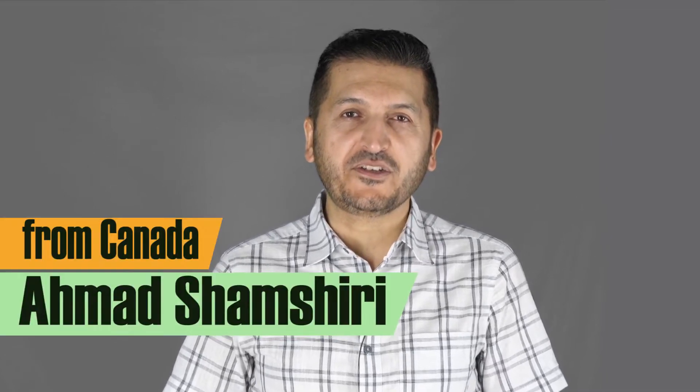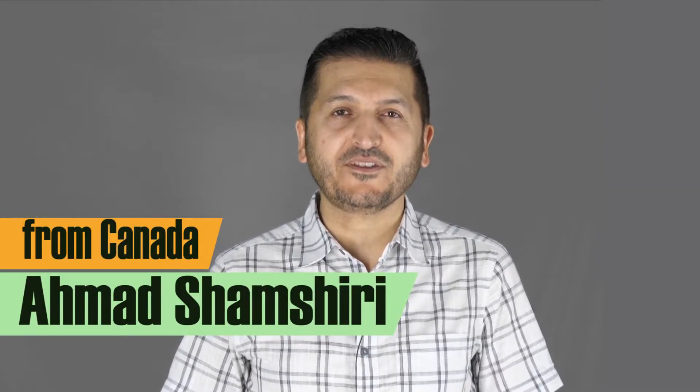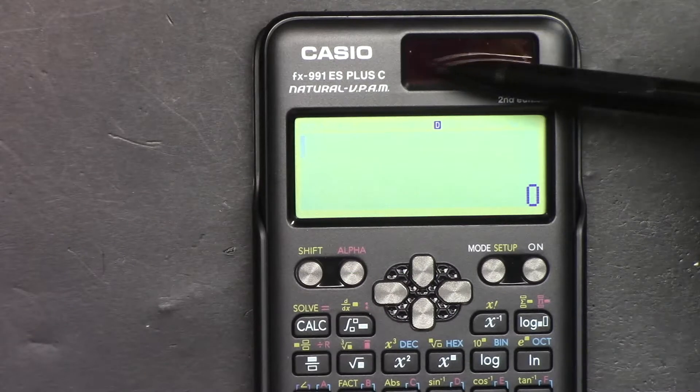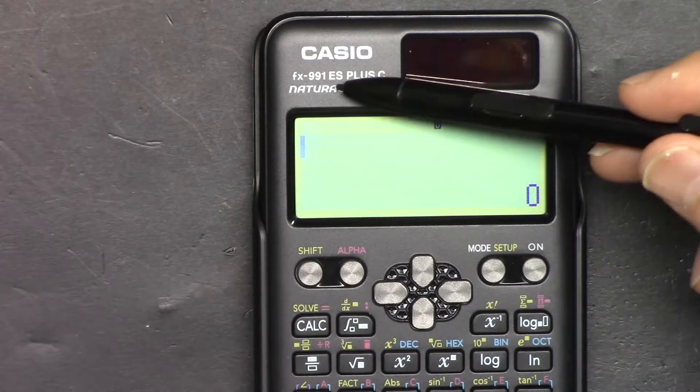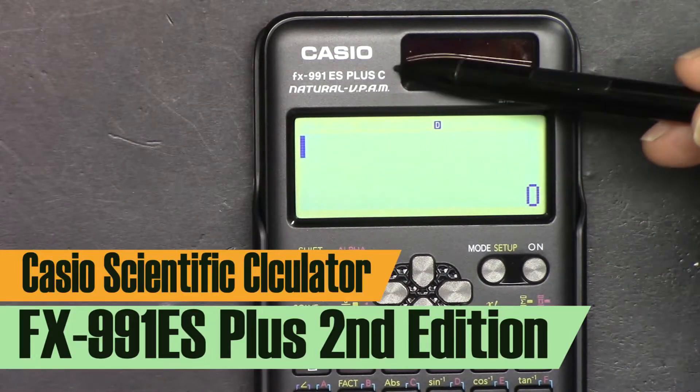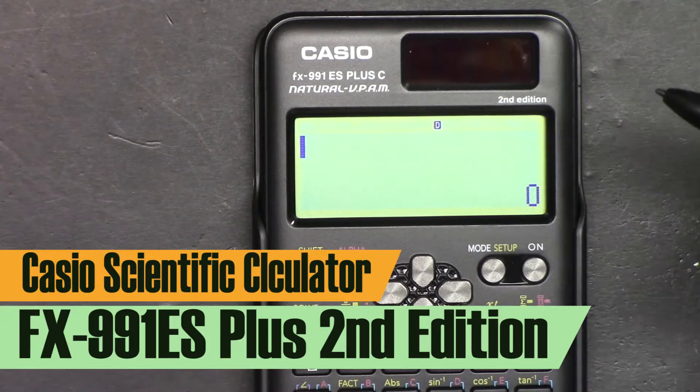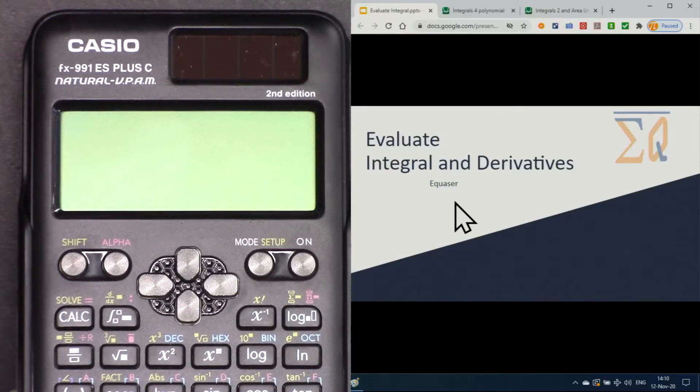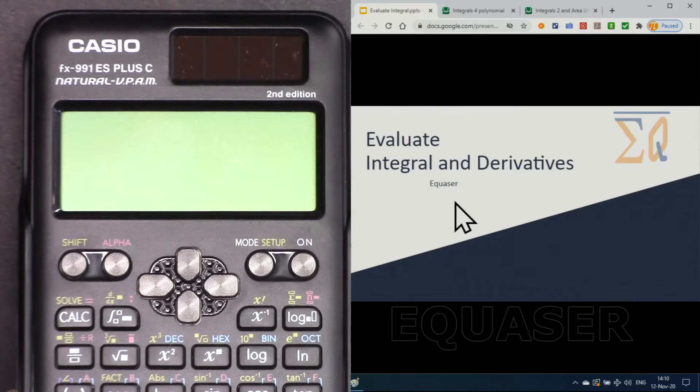Hi, welcome to a video tutorial from Equasor. My name is Ahmad Shamshiri. In this video, we are going to use this Casio FX-991ES Plus second edition scientific calculator to evaluate definite integrals and evaluate derivatives. Let's get started.